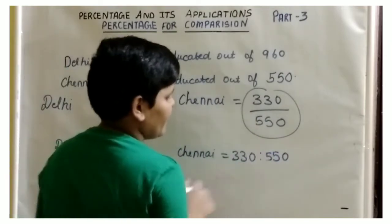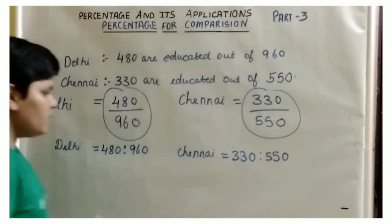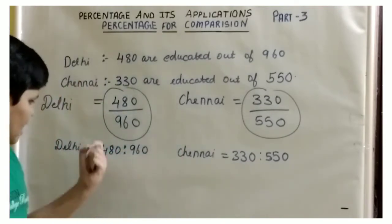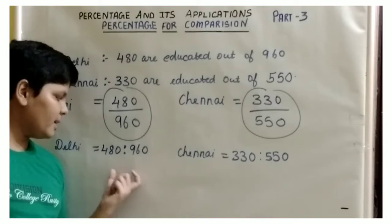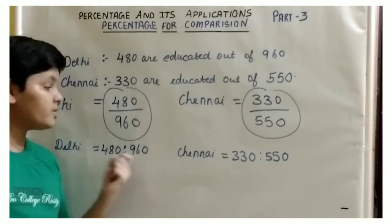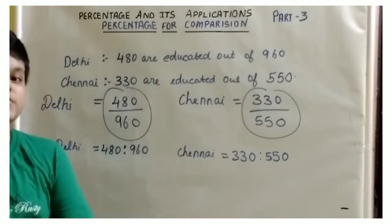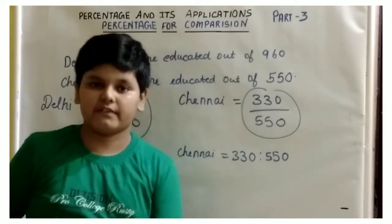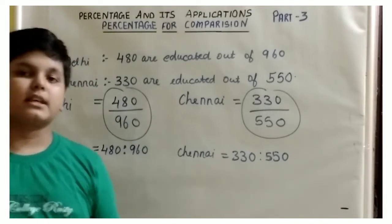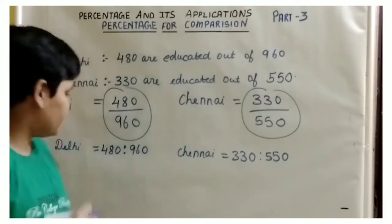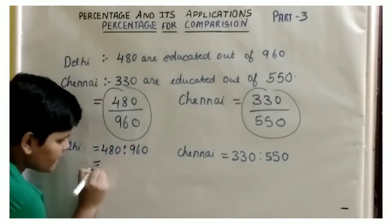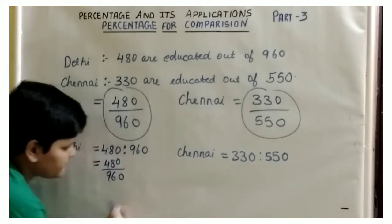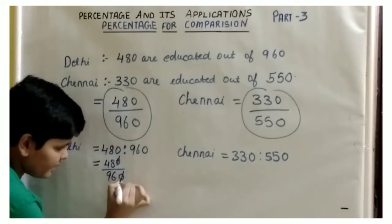Now, we are going to compare both ratios. We will convert 480 by 960 into its simplest form, and 330 by 550 into its simplest form, and then compare which is greater. For Delhi, 480 by 960 — the zeros get cancelled, giving us 48 by 96.